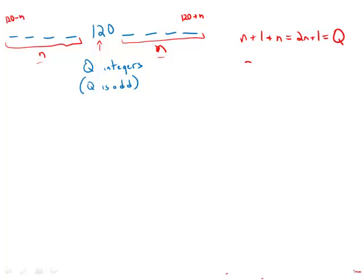We get 2n equals Q minus 1 by subtracting 1 from both sides. Then dividing by 2, we get n equals Q minus 1 over 2.